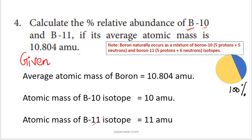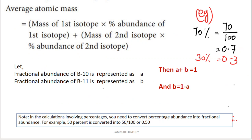The total boron is 100%, made up of B10 and B11 together. We need to calculate how much percentage is B10 and how much is B11. The formula relates average atomic mass and percentage abundance: average atomic mass equals the mass of the first isotope multiplied by its percentage abundance, plus the second isotope mass multiplied by its percentage abundance.